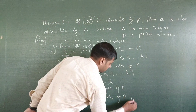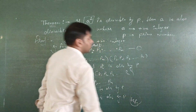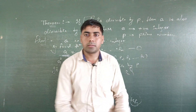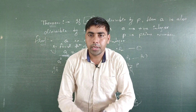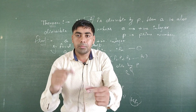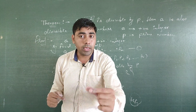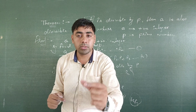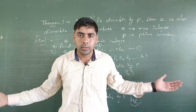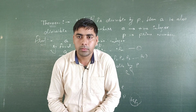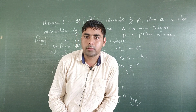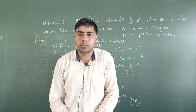Hence, the result is proven. It means: if a squared is divisible by any prime number p, then a is also divisible by that prime number p. Thank you, and see you soon in the next lecture.